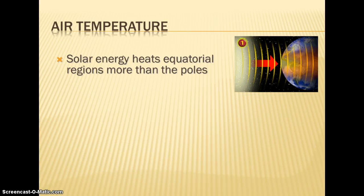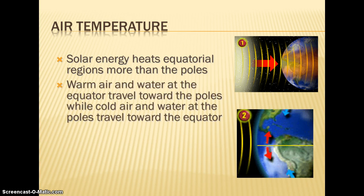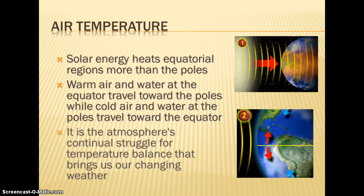Latitude is one of the things that determines the climatic conditions of a region — this has to do with insolation, or the amount of sunlight. The equator is heated more than the poles because sunlight is more direct there. That warm air and warm water from the equator travels towards the poles, and that colder, more dense air sinks and moves back towards the equator. It's this constant movement of heat and continual struggle for temperature balance that causes changing weather patterns.